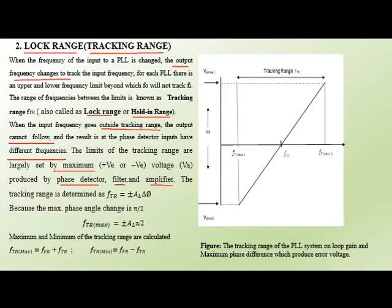VA is the output of the filter or amplifier. When VA is maximum (positive), the tracking range is maximum (FT maximum). When VA is minimum (negative), the tracking range is minimum. The tracking range is determined by: FT = ±AL × Δφ. Where Δφ is the change of phase difference between input and output. The maximum phase angle change is ±π/2, so FT maximum = ±AL × π/2. FT maximum = FFR + FTR and FT minimum = FFR − FTR, where FFR is the pre-running frequency and FTR is the tracking range frequency.